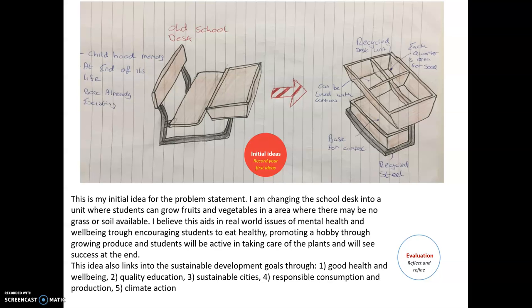I'm changing my school desk into a unit where students can grow fruit and vegetables in an area where there may be no grass or soil available. I believe this aids in real-world issues of mental health and well-being. The desk is being converted into an area divided into four segments for dividing up fruit, vegetables, etc. Underneath there is an area for putting your compost, which can be lined with cartons — recycling milk cartons — and people can grow different materials by filling up these cartons with soil.